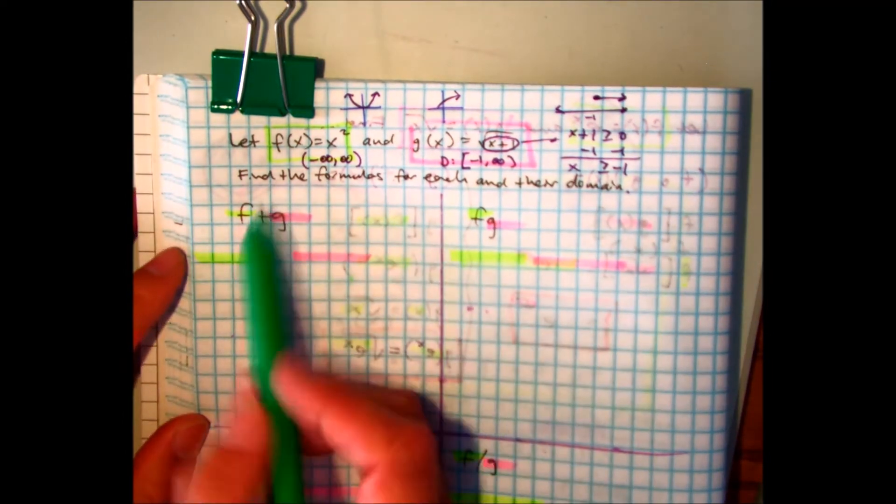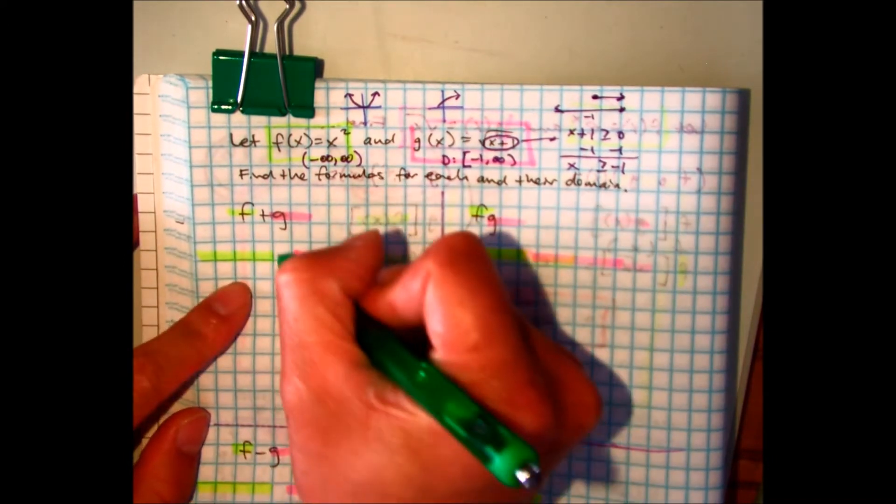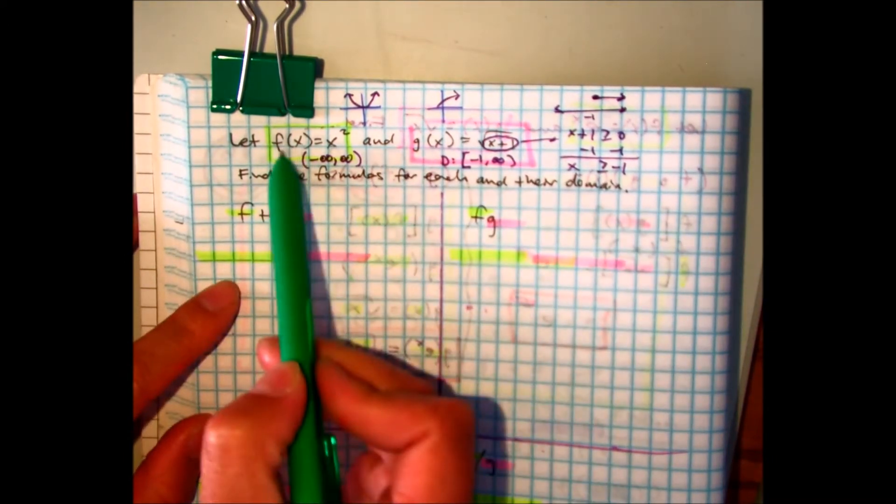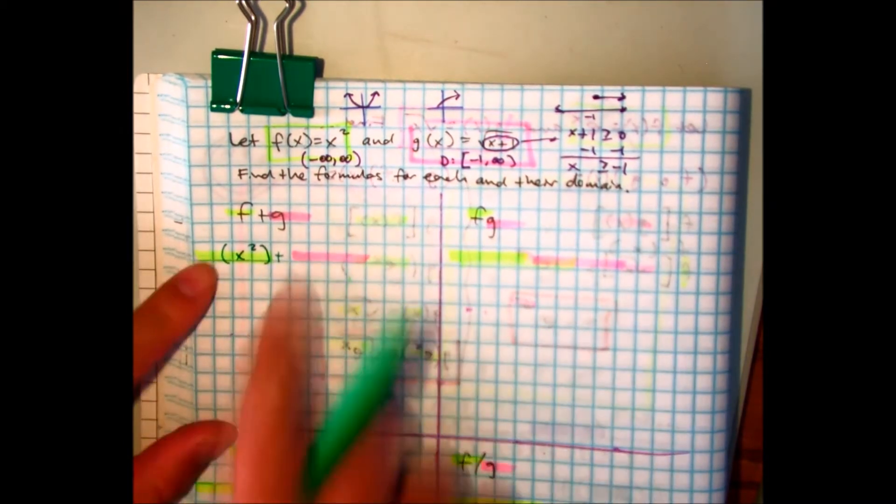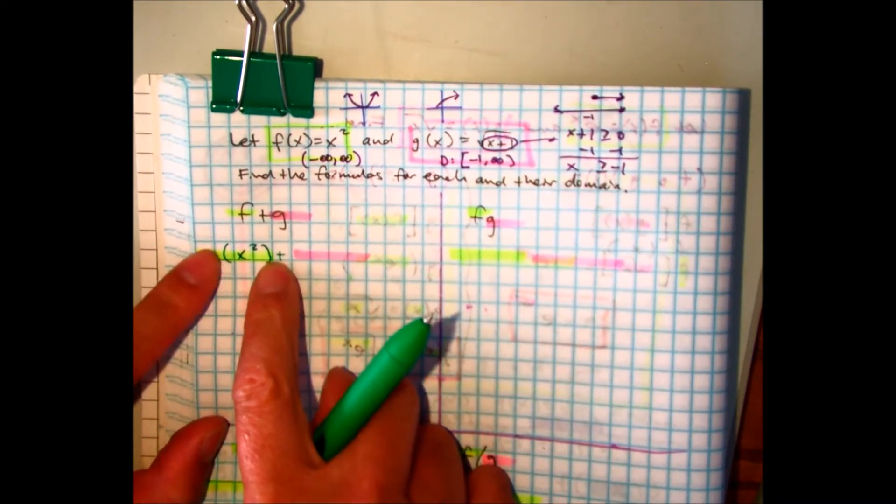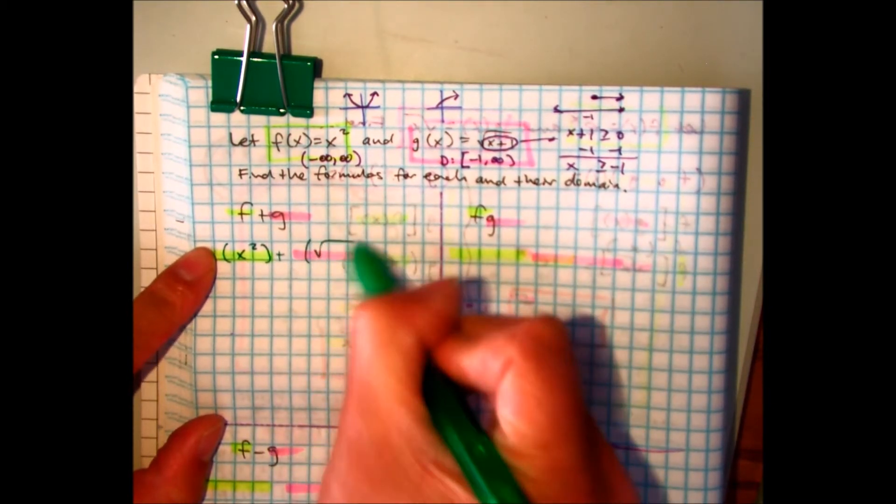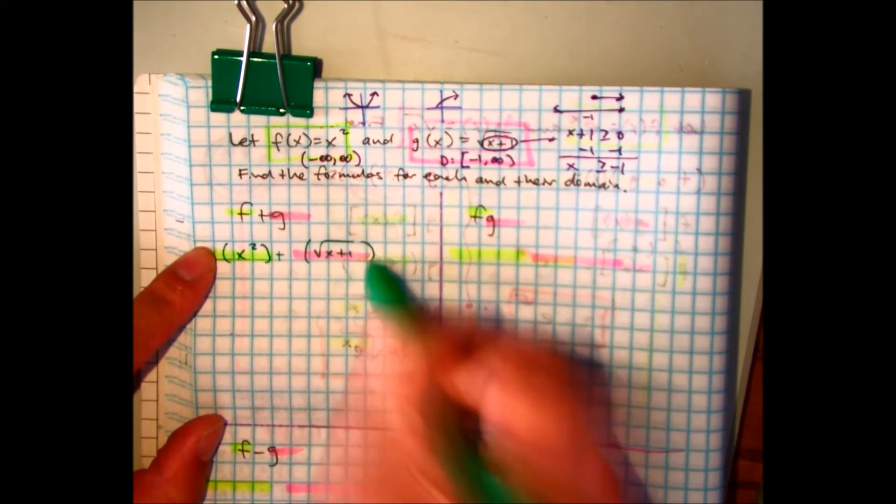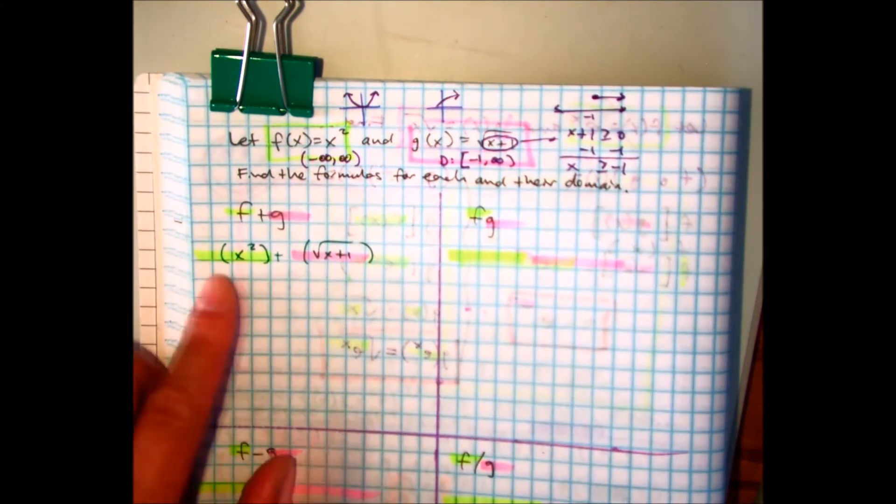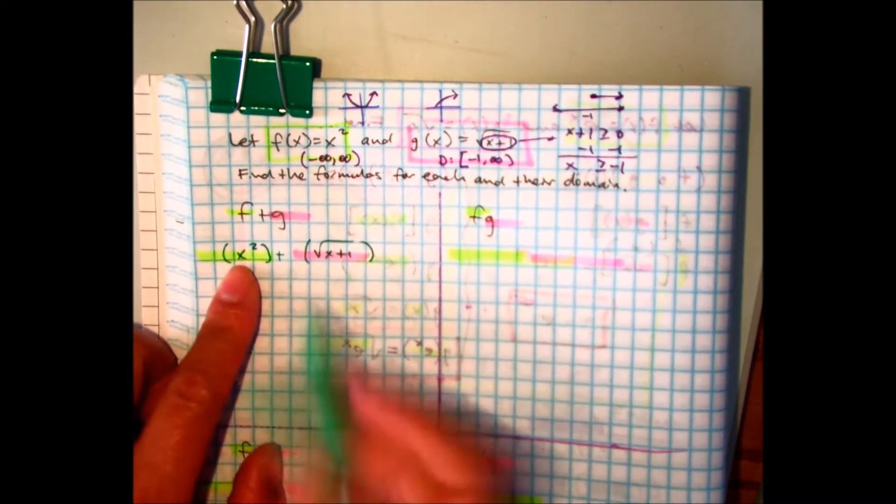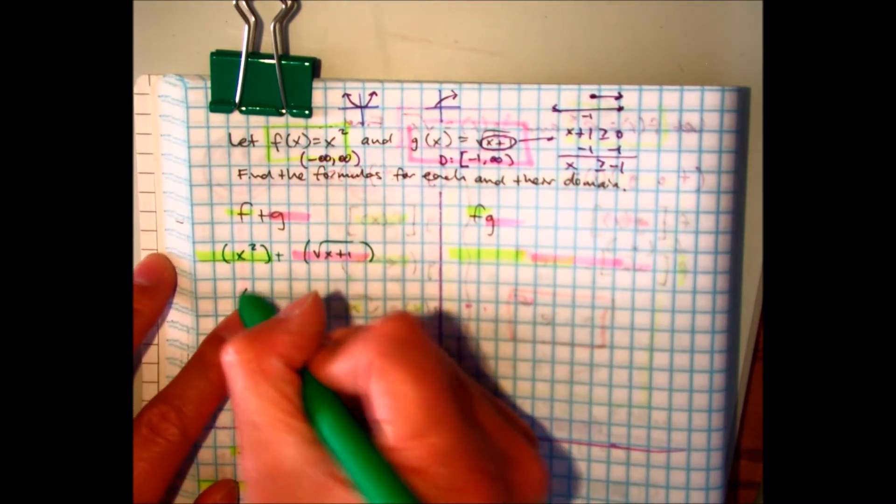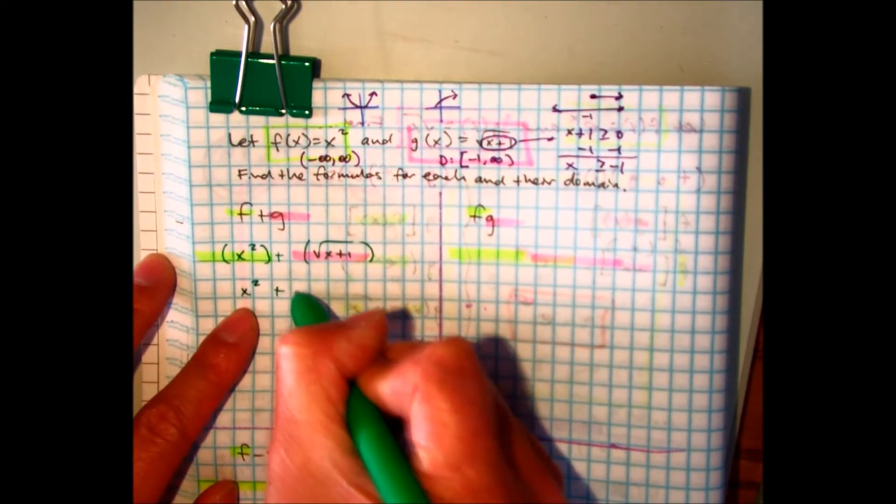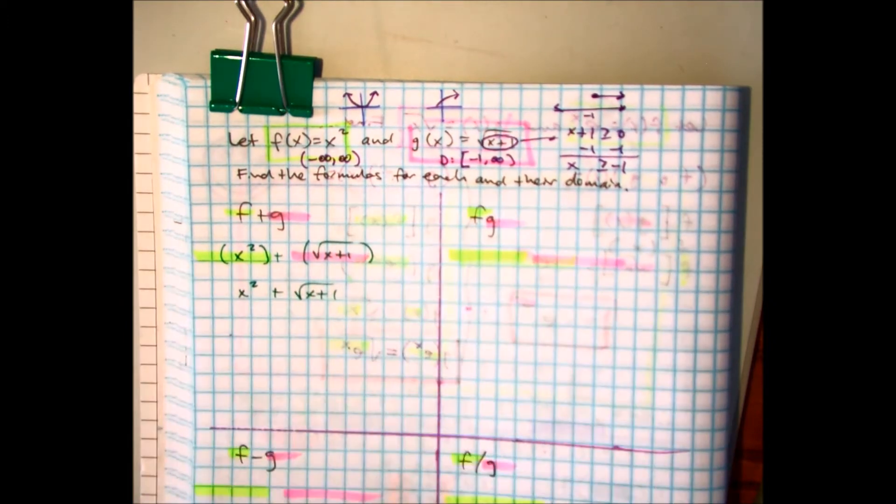Now, in our composite functions, we are to add them. Well, if I add them, all I have to do is a substitution. F of x is equal to x squared. Make sure your substitutions are in parentheses. Our g is the radical of x plus 1. Because you're adding, you don't need the parentheses anymore. Here, I have a radical, and this one's not in the radical. They're not the same, so you can't add them. So, your answer is x squared plus the square root of x plus 1.